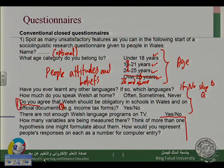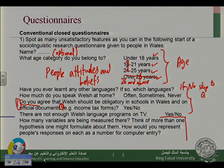One of these variables is called the dependent and the other the independent variable. As I explained before, the independent variable affects the dependent variable. Age here is the independent variable because we think age can affect attitudes. But do you think attitudes can affect age? No. So age can affect attitudes, not vice versa. Age can also affect English language learning — if you are 50, maybe your learning of English is going to be slower.